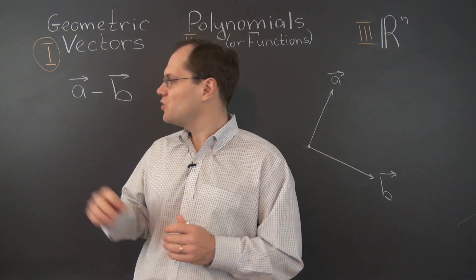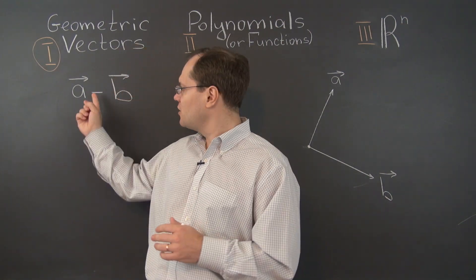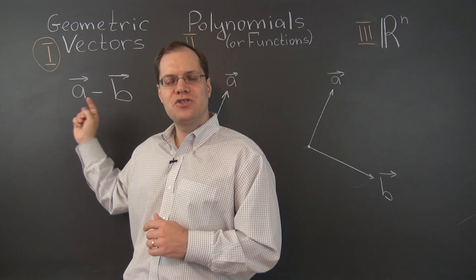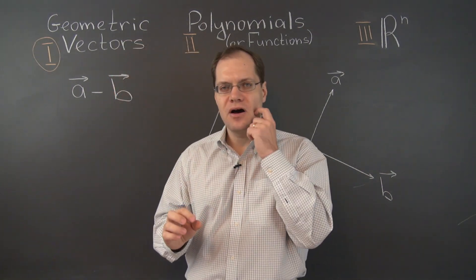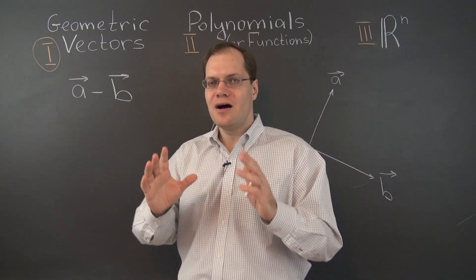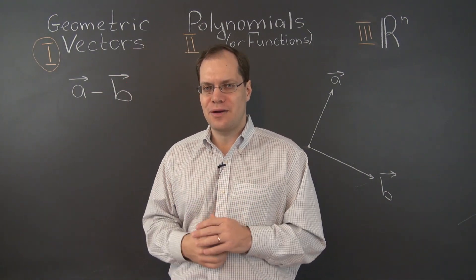Here is the first approach. You can think of A minus B as adding the vector minus B to the vector A. So we're interpreting A minus B, the difference, as the sum of the vectors A and minus B. And we can do that sum either by the tip-to-tail rule or by the parallelogram rule.